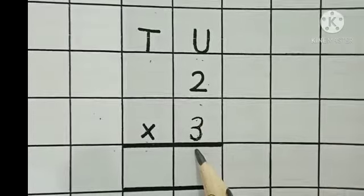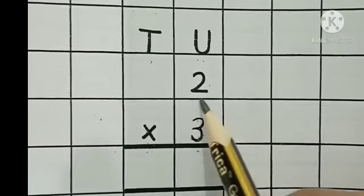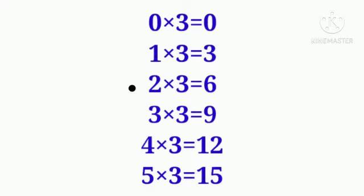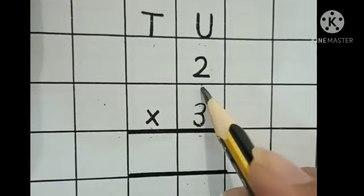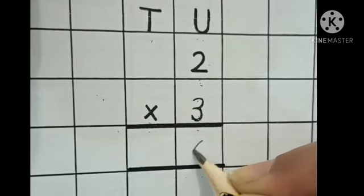So now let's start. This is number 2 and this is number 3. 3 ka table hum 2 tak read karenge. 2 times 3 is 6. Jab humne 3 ka table 2 tak read kiya, to hamare paas answer aaya 6. Ab hum yahan write karenge 6.